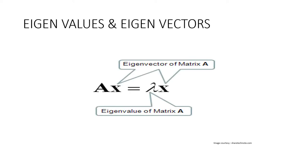To understand PCA in a better way, you need to understand the mathematical concepts of eigenvalues and eigenvectors, which are related to matrices. An eigenvector of a matrix A is a vector represented by a matrix x such that when x is multiplied with matrix A, the direction of the resultant matrix remains the same as vector x. Mathematically, this is represented as Ax = λx, where A is any arbitrary matrix, λ are the eigenvalues, and x is an eigenvector corresponding to each eigenvalue.